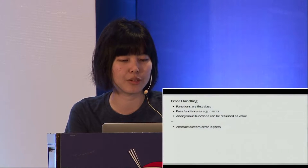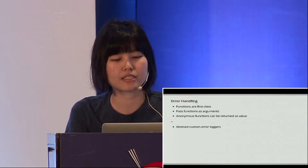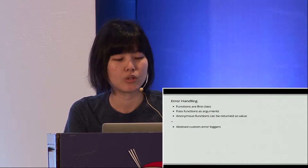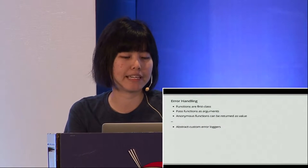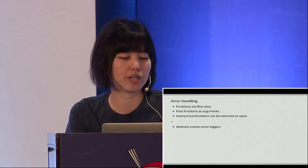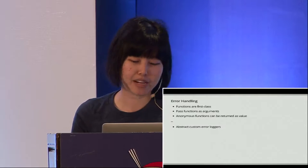These two features are useful when dealing with external APIs and when you want to stub return values. For error handling — functions are first class, you can pass functions as arguments, and anonymous functions can be returned as values. Let's see how this plays out when we want to extract custom error loggers.